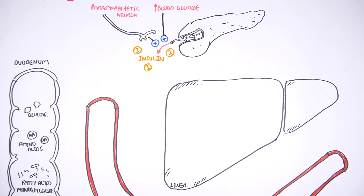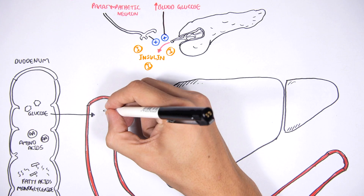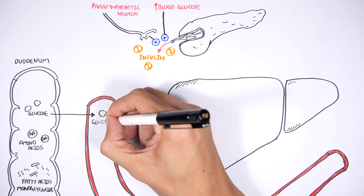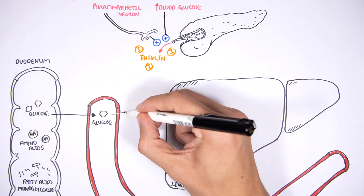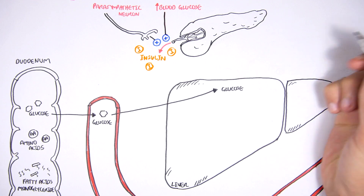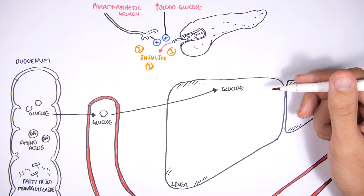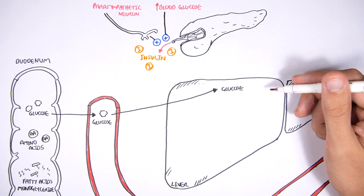Back to the duodenum and intestines — let's see what happens to each of these macromolecules just after we have eaten. Glucose will be absorbed into the blood, travel to the liver, and the liver will store glucose as glycogen.